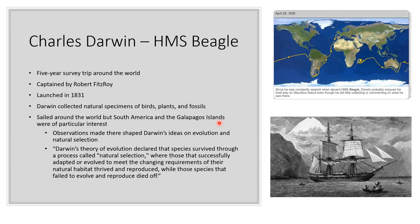That's where he got his ideas and evidence for natural selection and evolution. He started in England, sailed across the Atlantic, down around the tip of South America, stopped at the Galapagos Islands off the coast of Ecuador, then across the Pacific, down around Australia, and ended near Madagascar. Interestingly, since he was constantly seasick aboard the HMS Beagle, Darwin probably enjoyed his brief stay on Mauritius island, even though he did little collecting there. He sailed around the world but was seasick the whole time, which must have been awful.